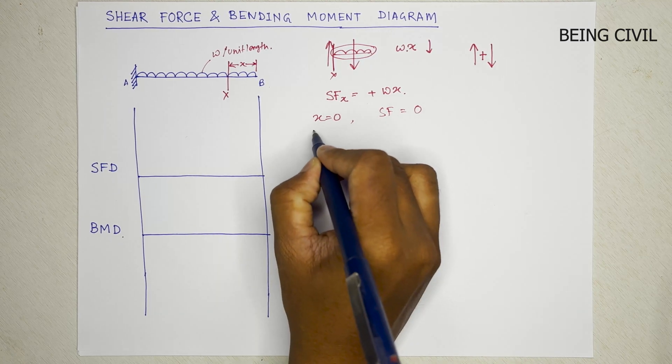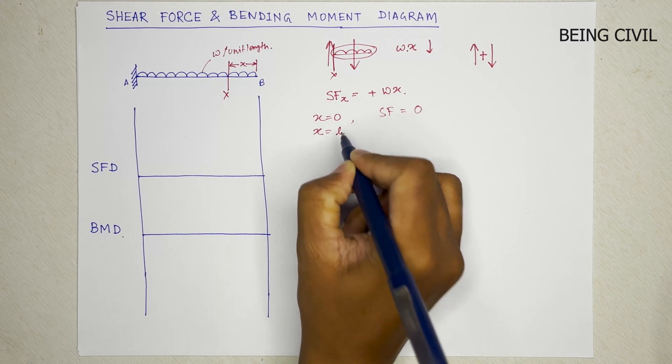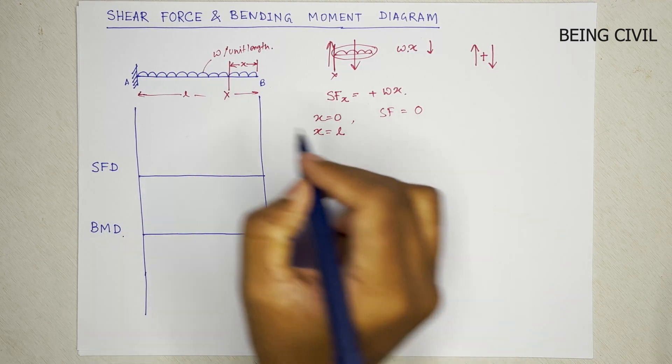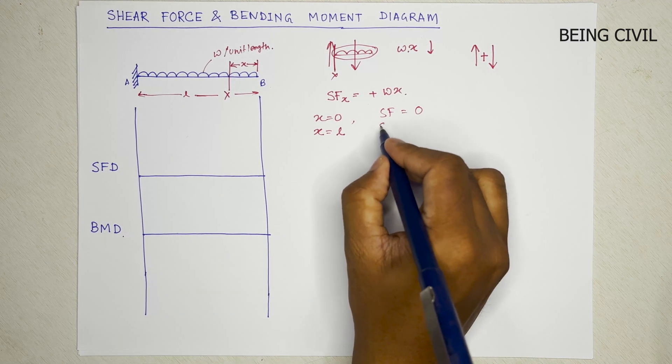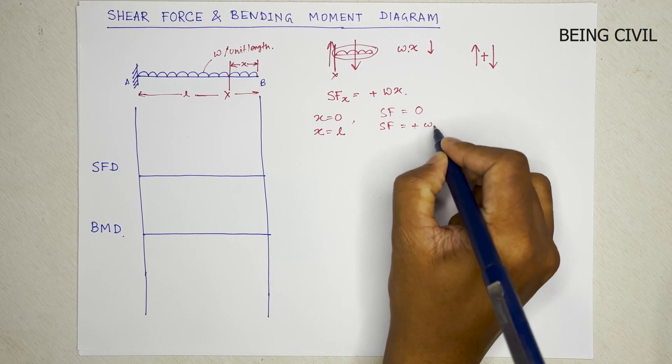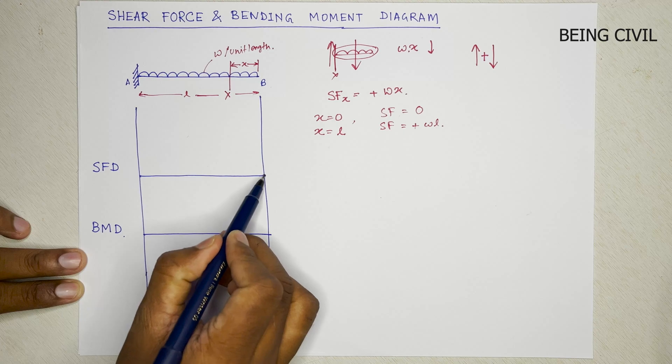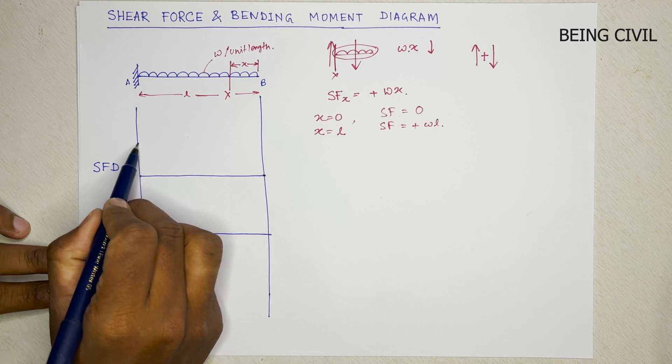And at x equal to L, that is the total length of the beam, the shear force will be plus wL. So the shear force diagram at this point will be zero and at this point will be wL.